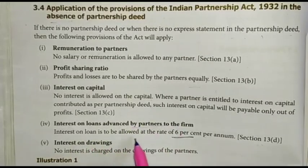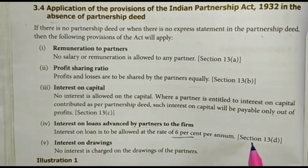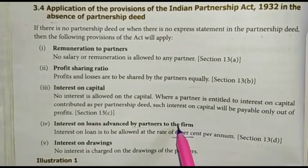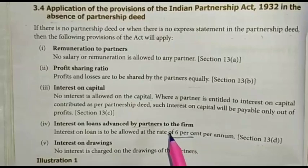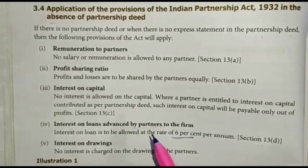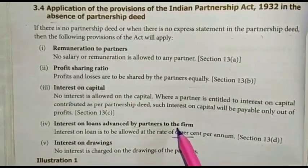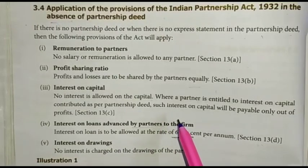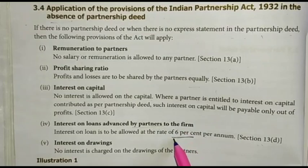Interest on loan is to be allowed at the rate of 6% per annum under Section 13(b). If the partnership deed mentions 8% or 9% interest, the minimum rate payable is 6% per annum.